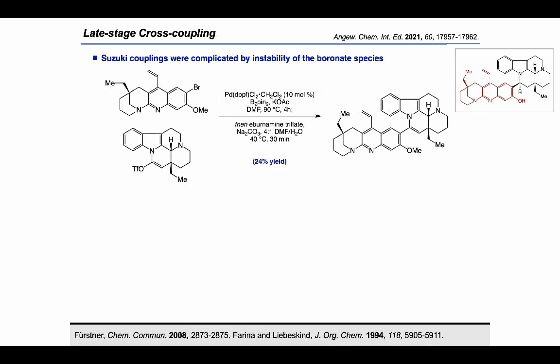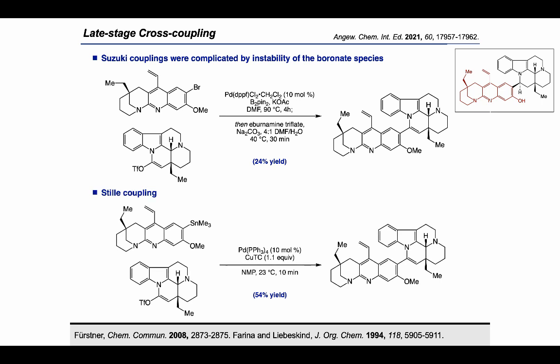With both the western and eastern fragments in hand, we tested our late-stage cross-coupling strategy. We initially investigated a one-pot Miyaura borylation–Suzuki coupling, but obtained the coupled product in only 24% yield; the remaining mass balance was triflate hydrolysis and protodestannylation products. Moving to Stille coupling, the dimer was obtained in significantly better yield. Using copper(I) thiophene-2-carboxylate, palladium catalyst, and NMP solvent, the dimer was obtained in 54% yield.